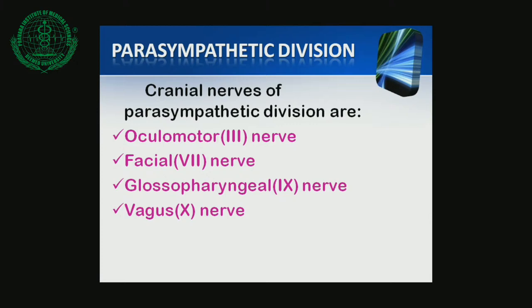The sacral portion of the sacral segments of the spinal cord innervates the smooth muscles forming the walls of the viscera and the glands, such as the large intestine, liver, spleen, kidneys, bladder, and genitalia.